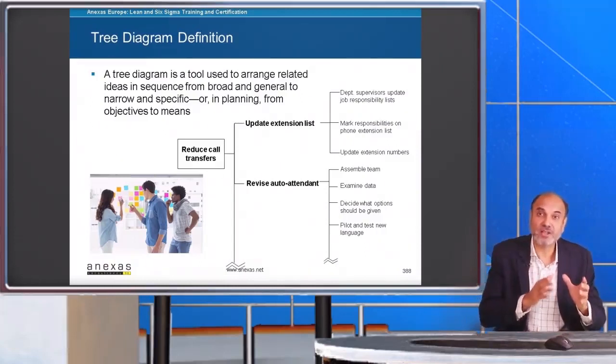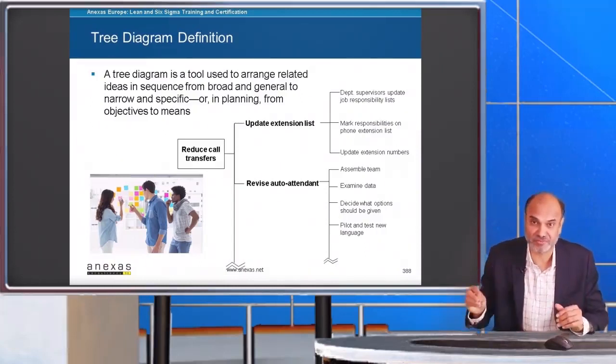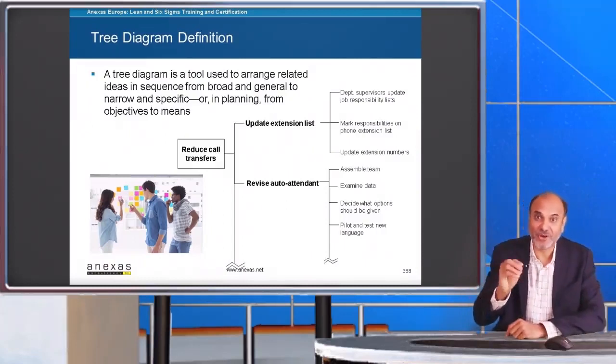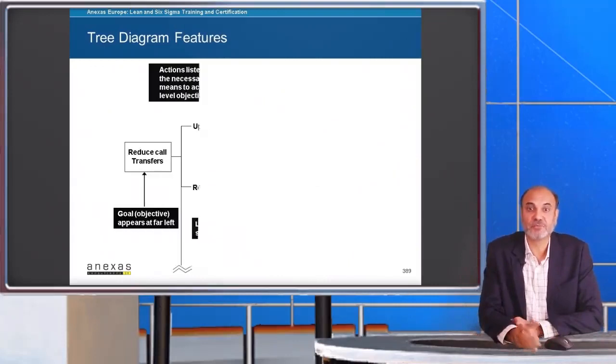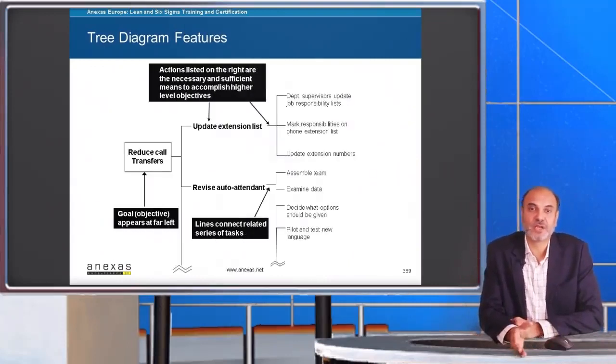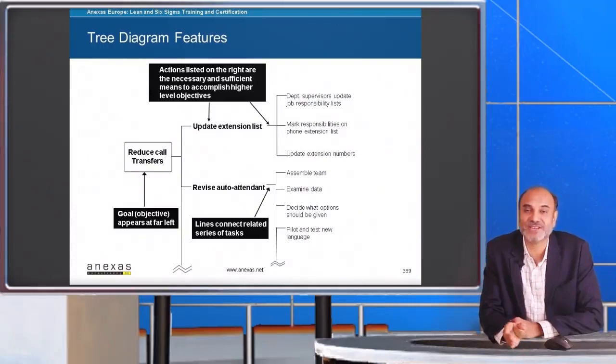You break down all the objectives into smaller components so that you get the tasks or the means of achieving these objectives. You place the goals or objectives on the left, and then actions are listed on the right as the necessary and sufficient means to accomplish higher level objectives.